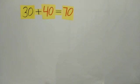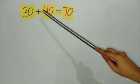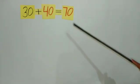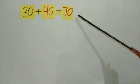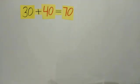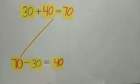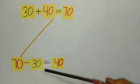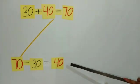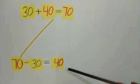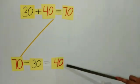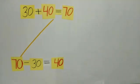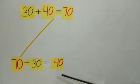Now it is time for the next sum. Students, when I add 30 and 40, what do we get? Yes, 70. Now see, when we subtract the first number 30 from 70, what do we get? We get 40, that is the second number. What is left after subtracting 30 from 70? 40.